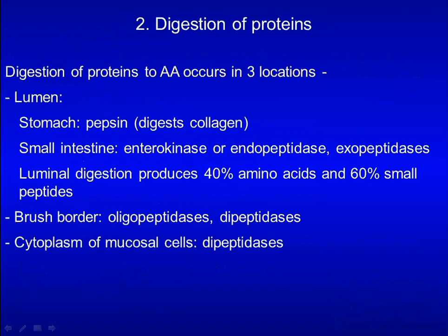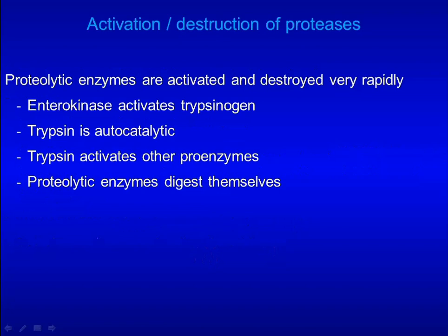Digestion of proteins takes place in three locations. First, in the lumen, it is catalyzed by pepsin in the stomach, and enterokinase and exopeptidases in the small intestine. Second, in the brush border, it is catalyzed by oligopeptidases and dipeptidases. Finally, in the cytoplasm of mucosal cells, it is catalyzed by dipeptidases. Enterokinase activates chymotrypsinogen, then chymotrypsin activates other proenzymes, and finally proteolytic enzymes digest themselves at the end of the digestive process.